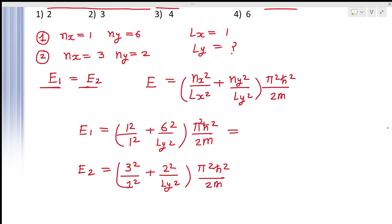This will be equal to 1 and 1. So, 1 plus 6 square means 36 upon LY square, pi square h cross square upon 2m.